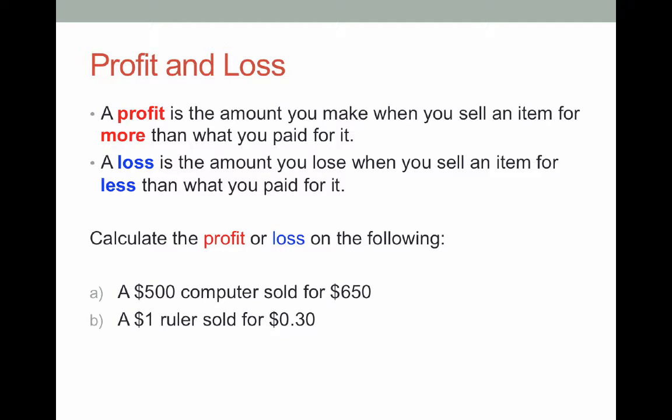For part A we're going to make a profit because we're selling it for more than what we bought it for. The profit in this case is going to be $150. This is the difference between $650 and $500.